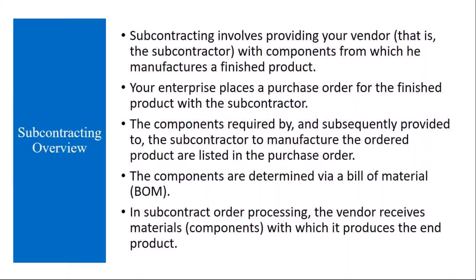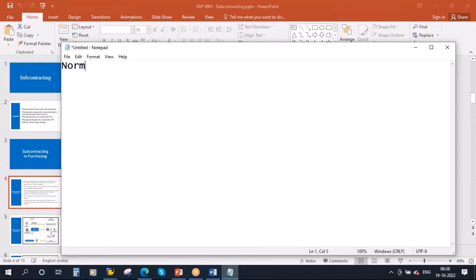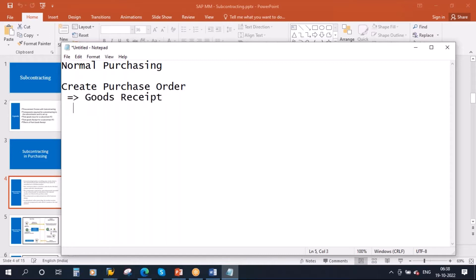Subcontracting involves providing your vendor with components from which he manufactures a finished product. In the normal purchasing cycle, what you do is: create a purchase order, issue the purchase order to the vendor, then he will supply the material, then you do goods receipt, receive the material, and after that, invoice it.